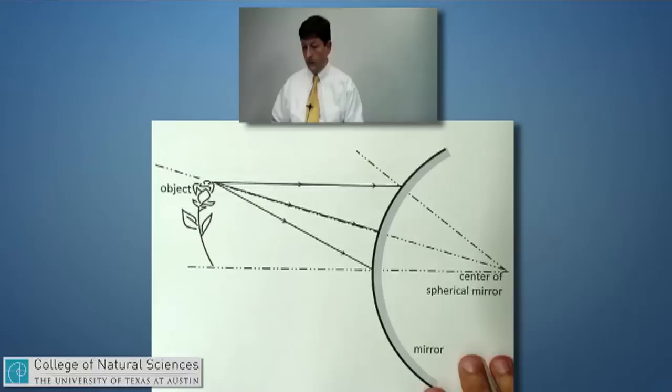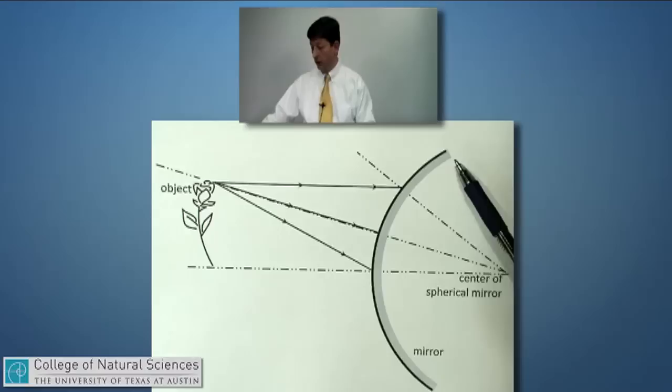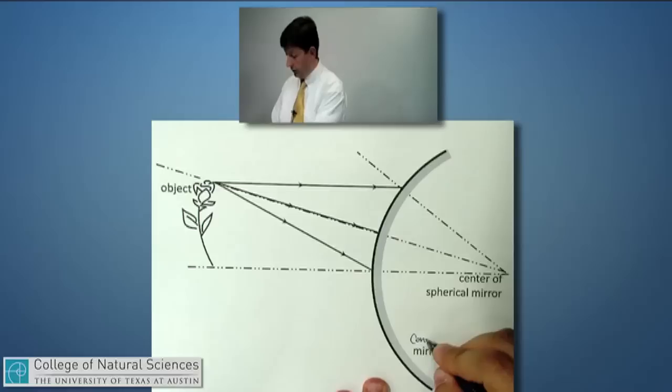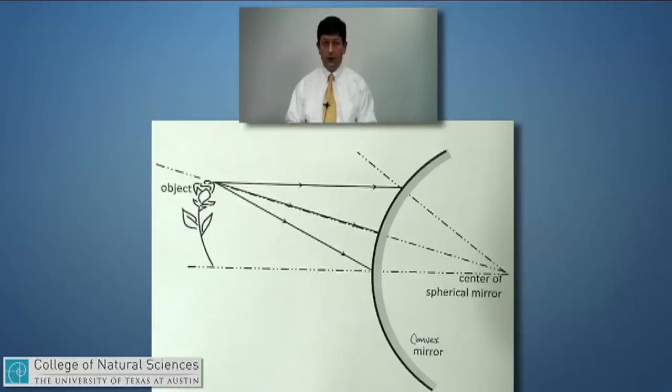So here's an object. We'll consider, again, a flower standing in front of a curved mirror. This is one that's curved outward. Sometimes you'll see the word convex for this kind of mirror. Convex means bulging outward and the other type of mirror is concave, like a bowl. So this convex mirror will reflect light from this flower.